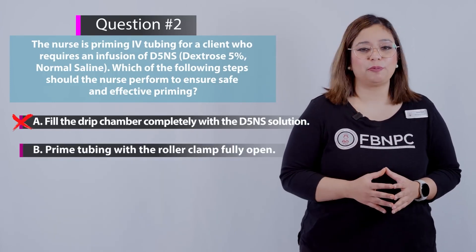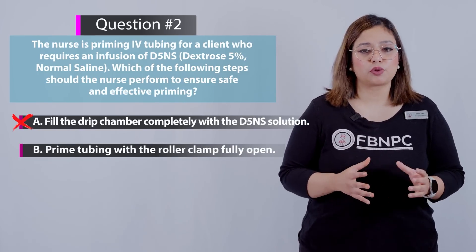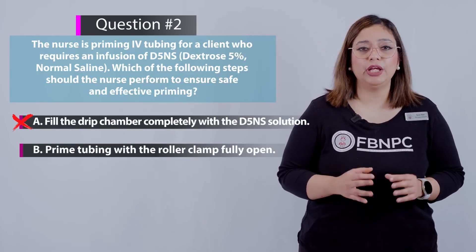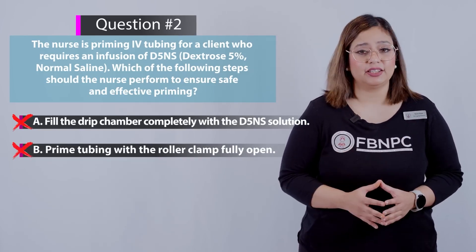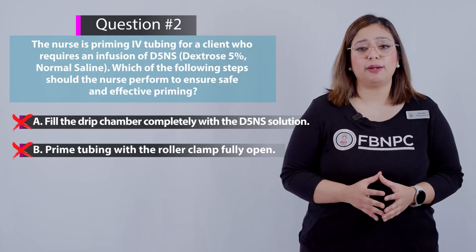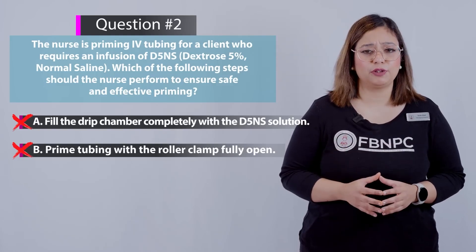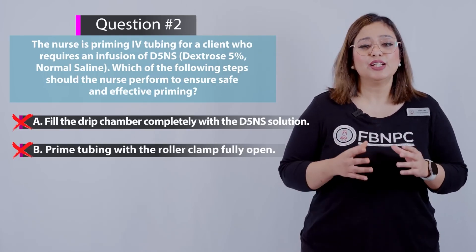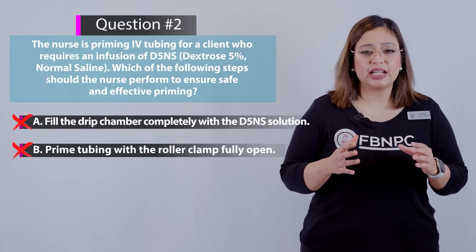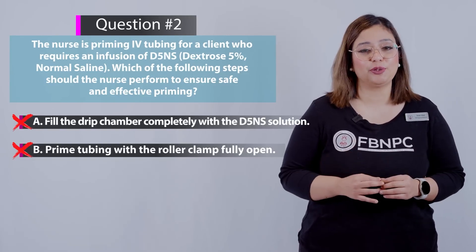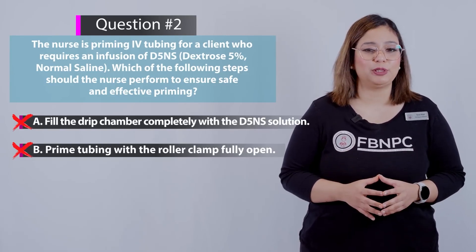Option B: prime the tubing with the roller clamp fully open. That is incorrect. The roller clamp should be opened slowly during priming of IV fluid, as a slow fill of the tubing decreases turbulence inside the tubing and the chances of bubble formation.